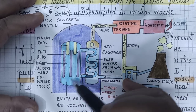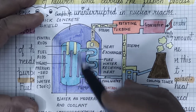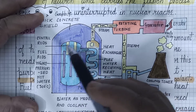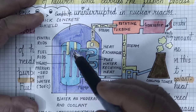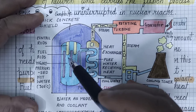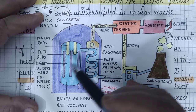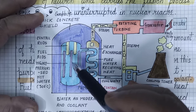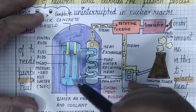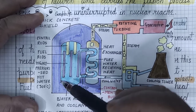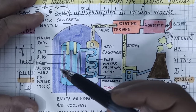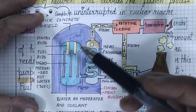The fuel rods are immersed in water inside the calandria. When heat is ejected during the nuclear fission process, this water absorbs that heat. So along with its function to slow down neutrons, water also acts as a coolant. The temperature of this water increases, and we know that the specific heat of water is high.